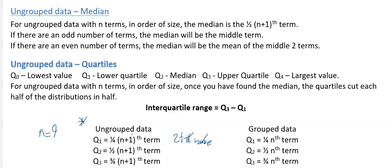A 2.5th value means halfway between the second value and the third value. Likewise for the median, it would be (1/2) × (n+1), so (1/2) × 10, which is the 5th value. Line them up in order and then find which one is the 5th value.